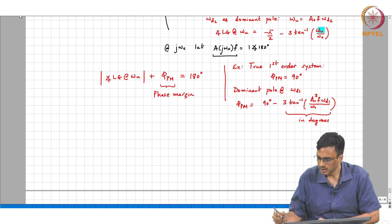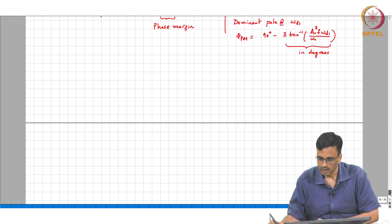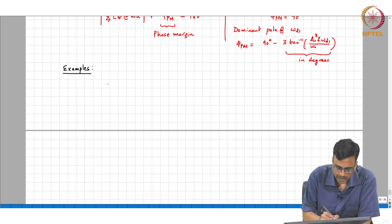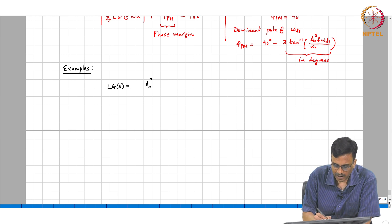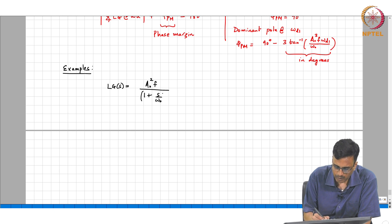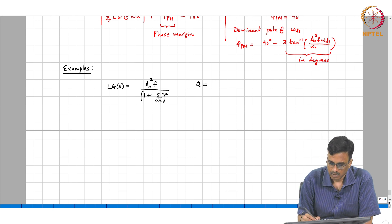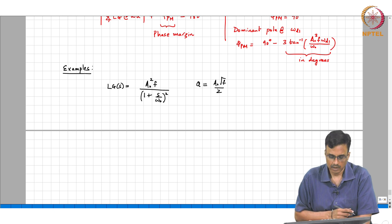With this background, let us take some examples. Let us take a second order system. Remember the uncompensated system in a second order case had a_naught squared f divided by (1 + s/omega_naught)², and what was the closed loop quality factor? In that case a_naught * root(f) / 2, which was too high anyway.